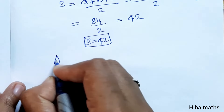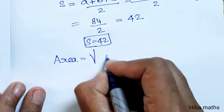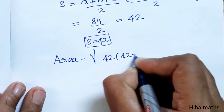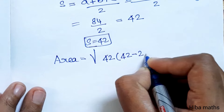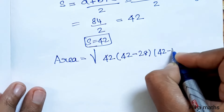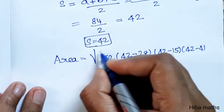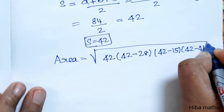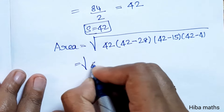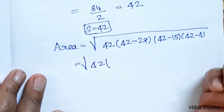Now substitute into the area formula: Area equals root of 42 into 42 minus 28, into 42 minus 15, into 42 minus 41. This gives root of 42 into 14 into 27 into 1.